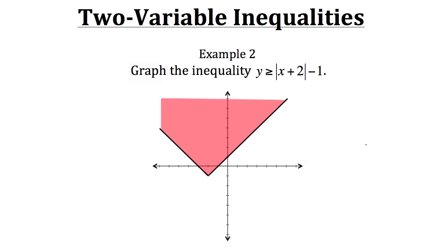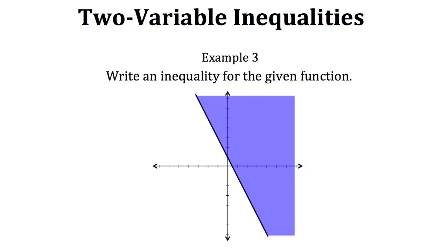That is why we have the entire region above the function shaded. Now let's move on to another concept. With example three we're starting to work backwards — they've given us a graph of the function and they want us to write the inequality for it. First we need to figure out what the equation for this line is. We know it will look something similar to y equals mx plus b. We know our b for sure since that's the y-intercept, and this line intercepts the y-axis at y equals one, so b is one.